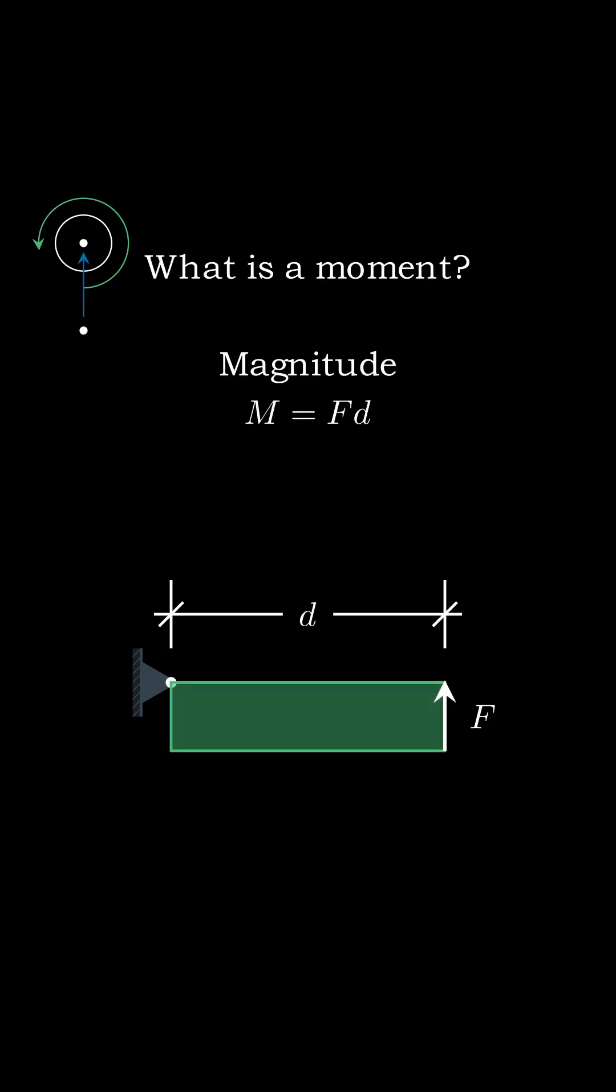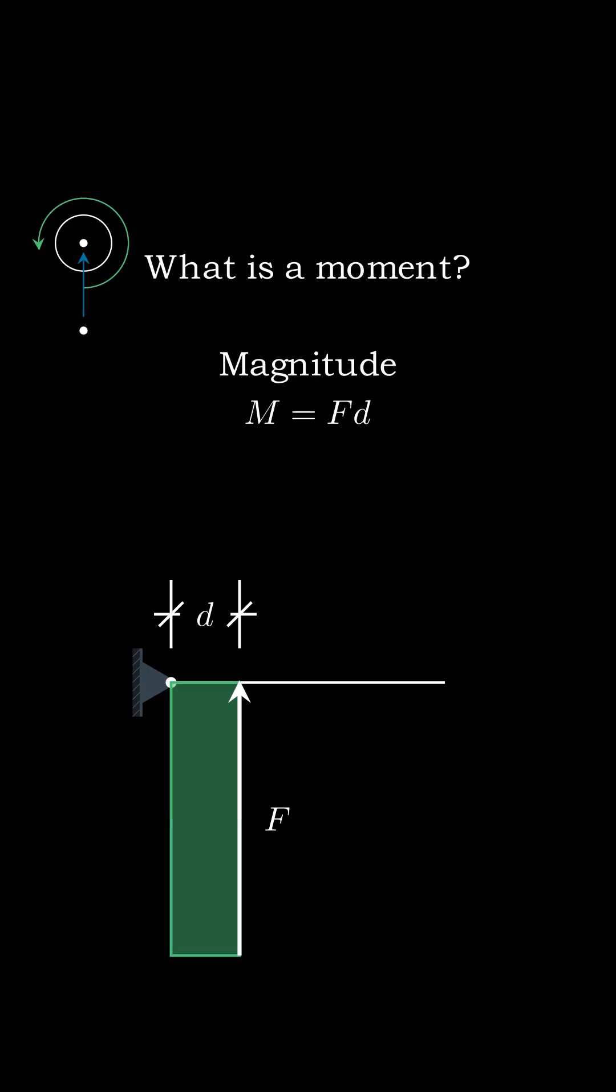This is what the moment looks like when you push at the far edge of the door. The reason you have to push harder when you push closer to the hinge is because the force has to get bigger to create a moment of the same size.